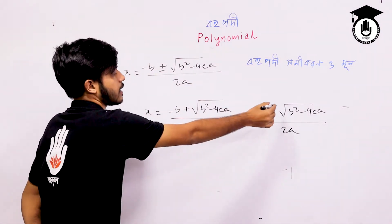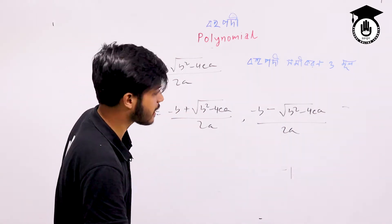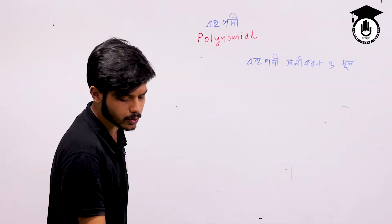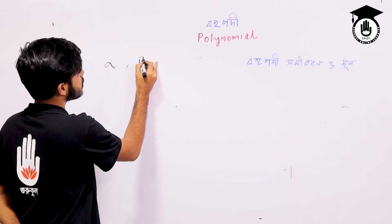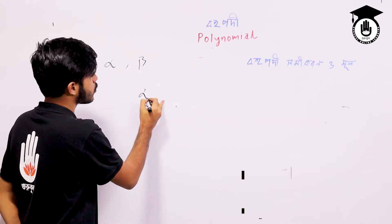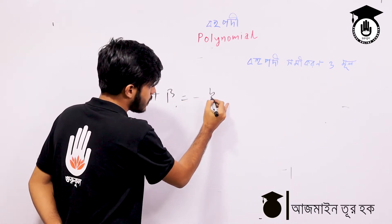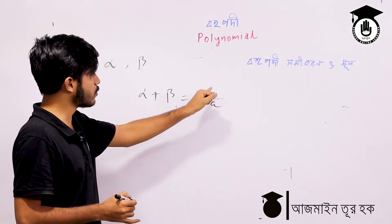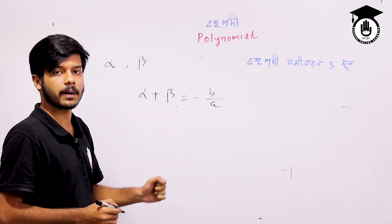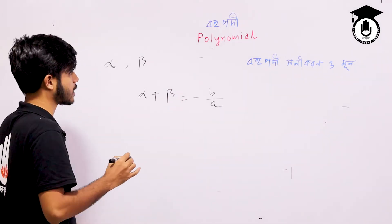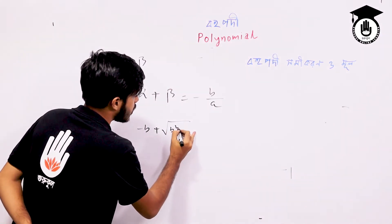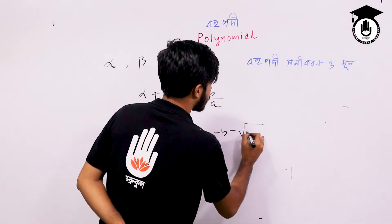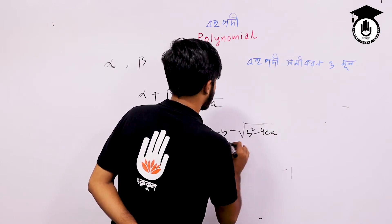This is the second root. The roots — alpha and beta — of the quadratic equation will be combined. So how will we recognize them? The e-duty (alpha) equals minus b plus the square root of b squared minus 4ac, divided by 2a.